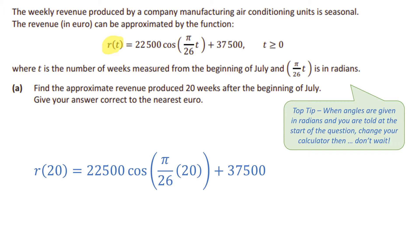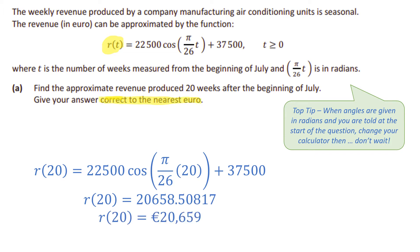It's really important across all different types of questions that you can recognise function notation. We're subbing in 20 instead of t — R(20), not R multiplied by 20. Make sure your calculator is in radian mode. We get 20,658.50817, and since the question asks correct to the nearest euro, rounding to the closest whole number gives a final answer of €20,659.